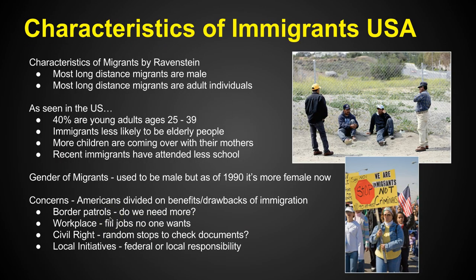Looking at characteristics of immigrants in the USA — according to Ravenstein's characteristics of migrants, most long-distance migrants are male, because traveling long distances is typically for work, and most jobs traditionally have been done by men. The other characteristic is that they're usually adult individuals — so traditionally, male adult individuals traveling long distances.